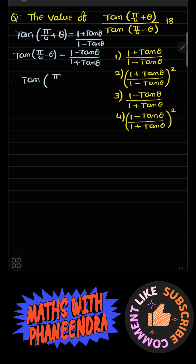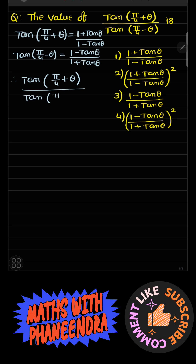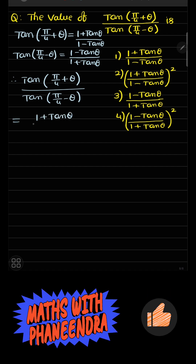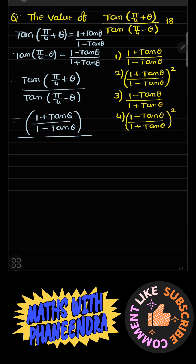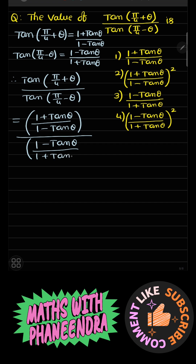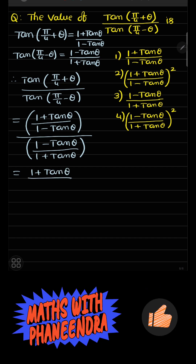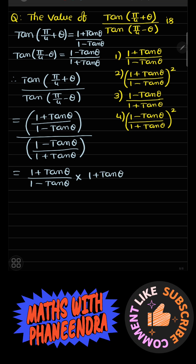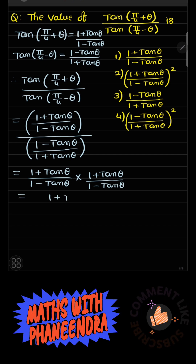So, tan(π/4 + θ) divided by tan(π/4 − θ) is equal to (1 plus tan θ)/(1 minus tan θ) divided by (1 minus tan θ)/(1 plus tan θ). This gives us (1 plus tan θ) times (1 plus tan θ), which is (1 plus tan θ) whole square.